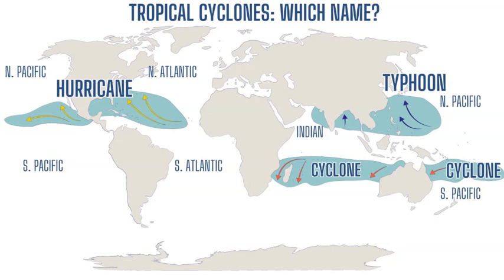But if they form in certain geographic locations like certain ocean basins, they're called different names. In the Atlantic, north and south, forming off the coast of Africa and moving west towards the Americas — North America, Central America, and the Caribbean — they're called a hurricane. They're also called a hurricane if they form off the coast of Mexico in the northern Pacific Ocean and move west or up towards the Gulf of California.